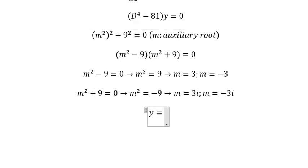We have c1 times e to the power of 3x plus c2 times e to the power of negative 3x,